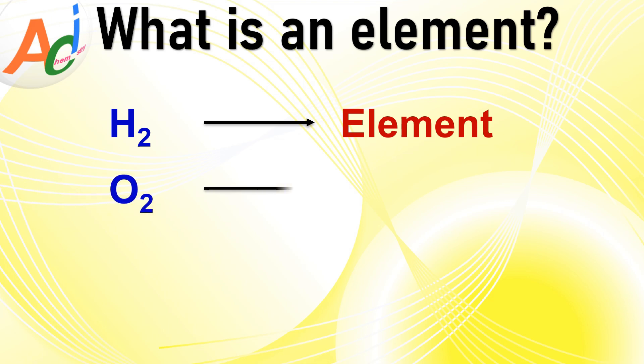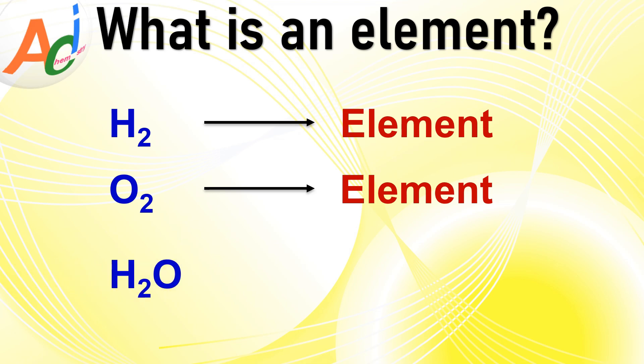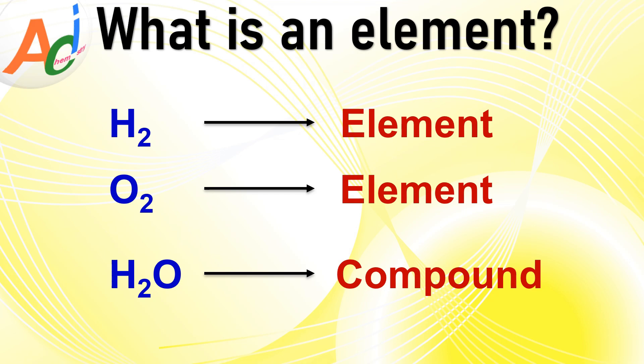Another example is di-oxygen, denoted as O2. It is also an element because all its atoms have the same atomic number, which is equal to 8. Now consider water, represented by H2O. Is it an element? No. Water is not an element because it consists of two different types of atoms: hydrogen and oxygen.